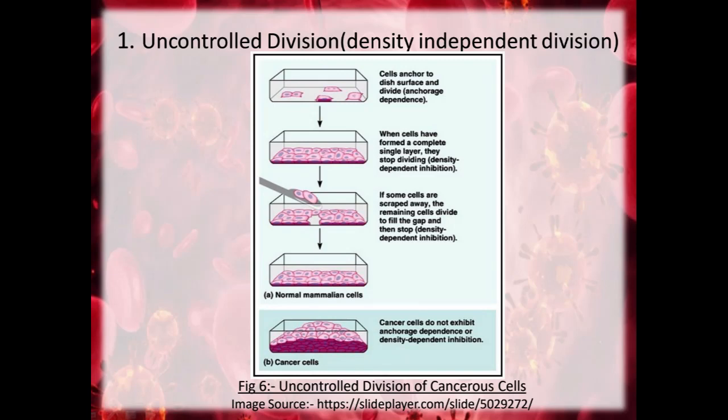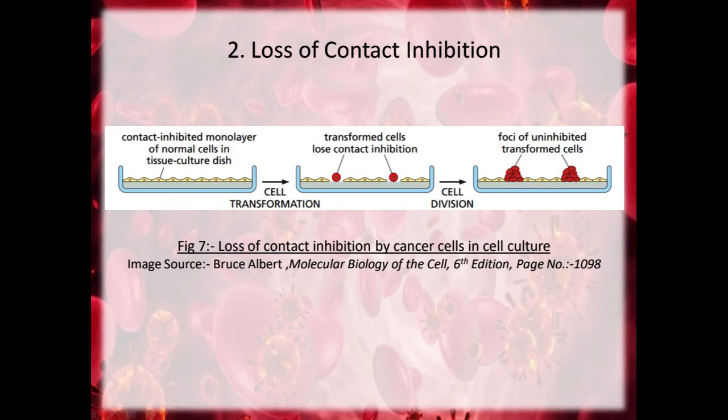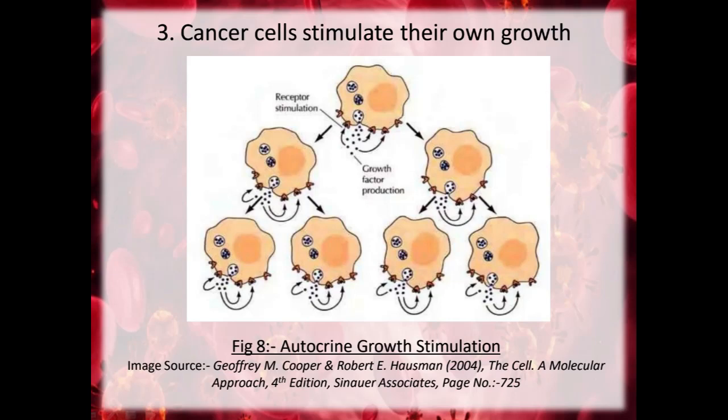The second property is loss of contact inhibition. When one cell comes in contact with another cell, due to contact inhibition it does not multiply further. But when normal cells are transformed into cancerous cells, they lose the property of contact inhibition and keep on multiplying in an uninhibited manner, causing tumour formation. The third property is that cancer cells stimulate their own growth through autocrine growth stimulation, producing growth signals by themselves without depending on any other sources.